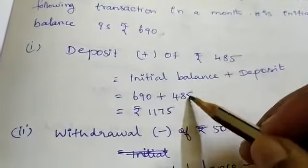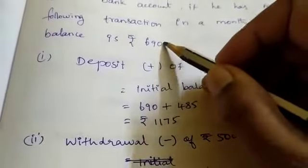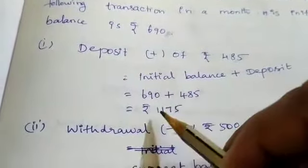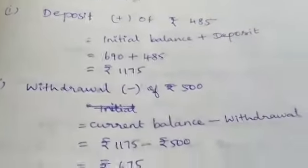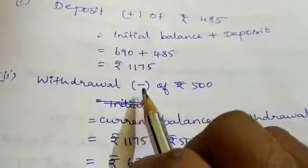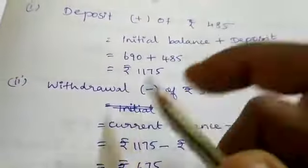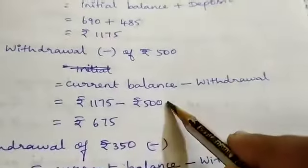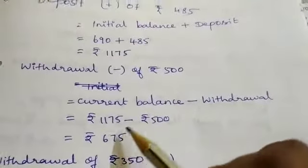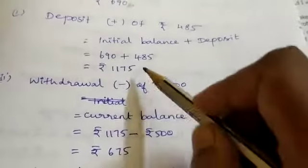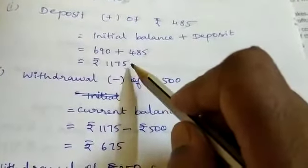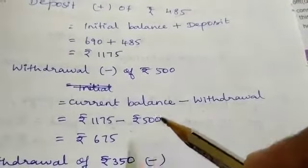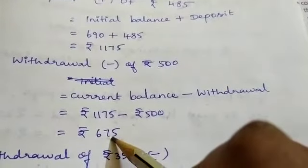Rs. 480 deposit amount in the bank. Initial amount is Rs. 690, plus deposit Rs. 485, gives Rs. 1,175. Second transaction: withdrawal means minus — Rs. 500. Current balance minus withdrawal: 1,175 minus 500 equals Rs. 675.